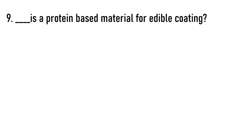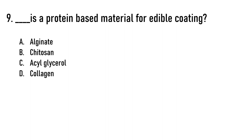Next question: Dash is a protein-based material for edible coating. Options are alginate, chitosan, acylglycerol, or collagen. The correct answer is option D — collagen.